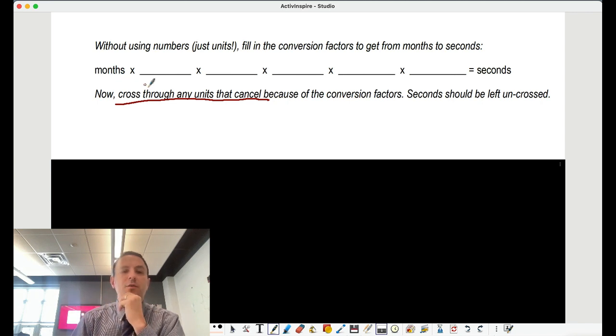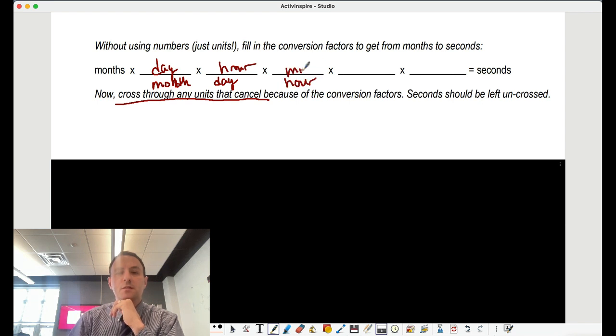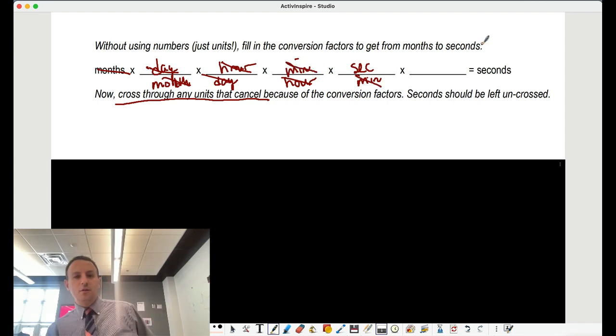We're going to have to go from months. We won't have a direct conversion to days, so we're going to have to go months to days. Days cancel out. Days go to hours. Hours cancel here to minutes. Seconds here over minutes. Each time, if you look at it, we get that cross-out method. And all we're left with is seconds. That's the only thing that's left uncrossed. That's the key behind dimensional analysis.